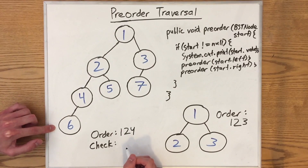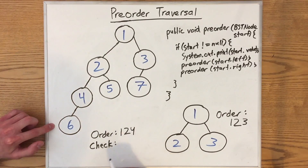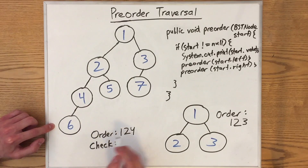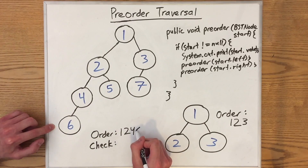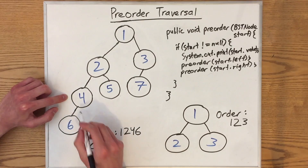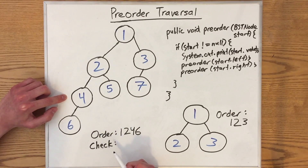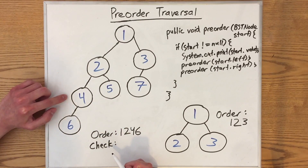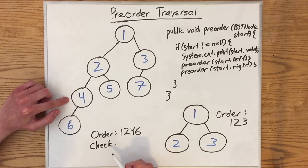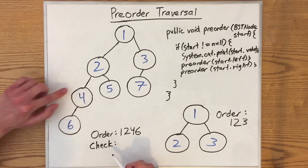We go down into 6, we treat this single node as its own tree. Since that's a leaf, to finish processing it we just have to print out its root value. So now we've finished this node, we go up into this node, we want to make sure that we've checked the right subtree as well. But it doesn't have any right children, so that means we've finished this tree entirely.